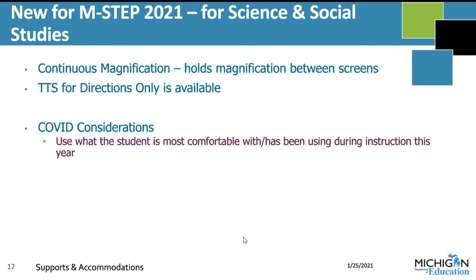Something new for M-STEP 2021 is what we're calling continuous magnification. This option retains the magnification between screens. Without it, a student who turns on magnification for one test question will find it gone on the next question and would have to turn it on again. If you have a student who absolutely needs magnification for every single test question, consider the continuous magnification option so the student doesn't have to reselect it every time. We also have text-to-speech for directions only, which is now available as well.